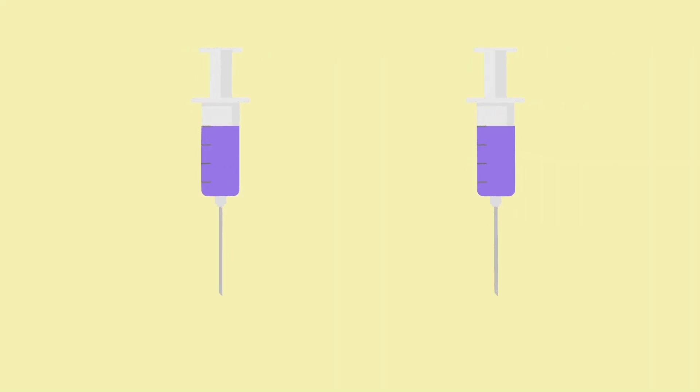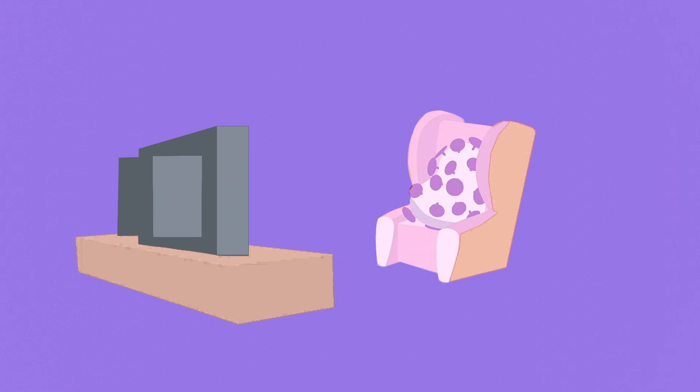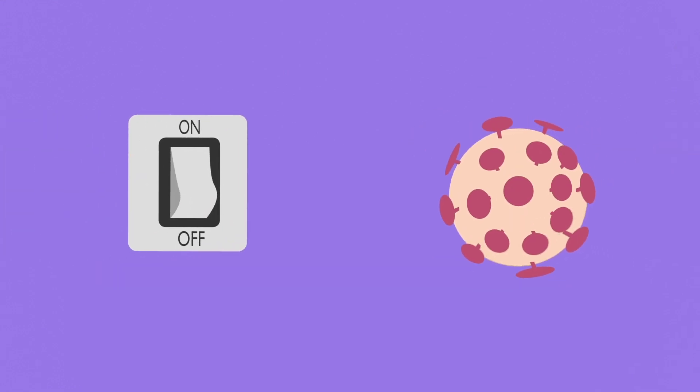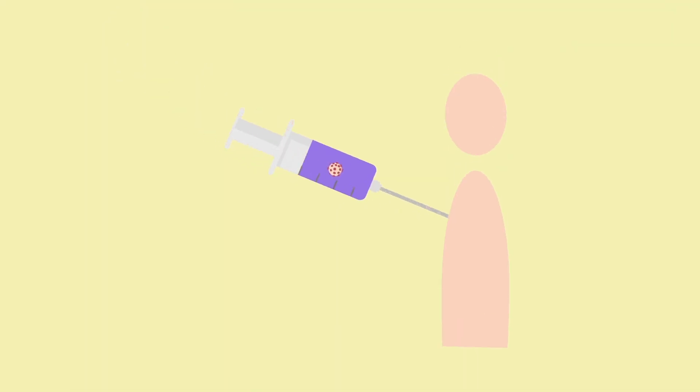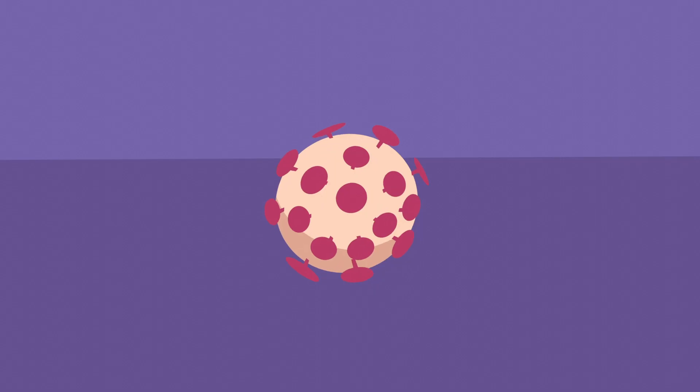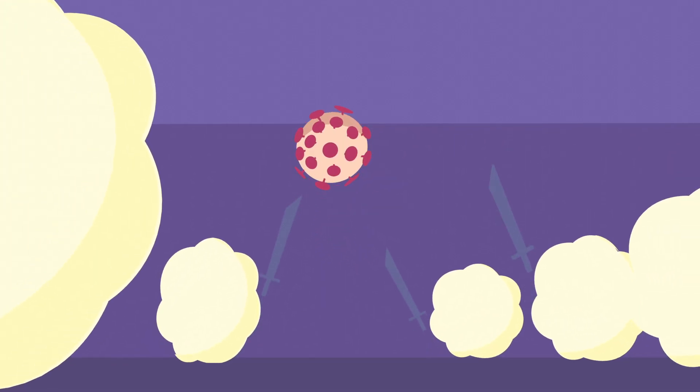There are two classic types of vaccines. The first is an inactivated vaccine. This is when a virus is deactivated and injected into a person. Their immune system sees the foreign components of the virus and develops an immune response against it.